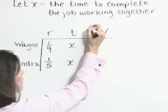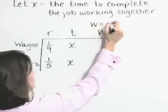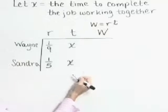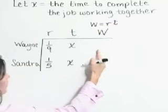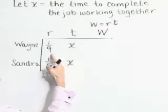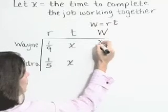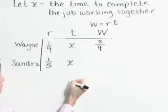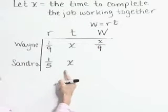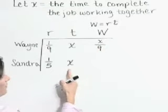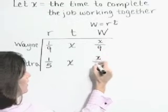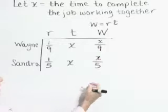Now, work is equal to rate times time. So the amount of work done by Wayne is his rate, one-ninth times time X. That's one-ninth X or X over nine. The amount of work done by Sandra is her rate times time, one-ninth X or X over five.